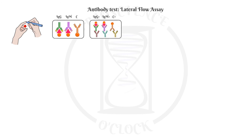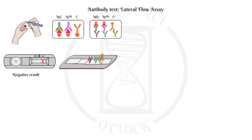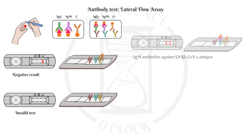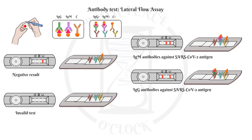In a negative result, there is no appearance of color on the IgG and IgM bands, yet color must appear in the control test indicator to confirm the test works adequately. If the control test indicator does not show color, then the test becomes invalid and no results can be drawn from it. Here we have examples of positive results for IgM or IgG antibodies, or for both.